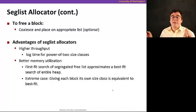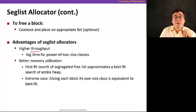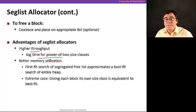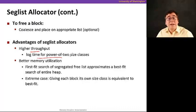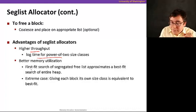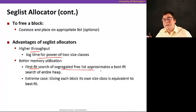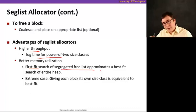The advantages of segregated list allocators are higher throughput — we get logarithmic time for power-of-two size classes to find the appropriate list. There's also better memory utilization because a first-fit search on the segregated free list closely approximates a best-fit search over the entire heap, though it's an approximation, not exact.